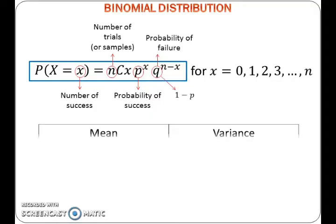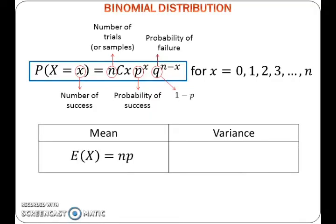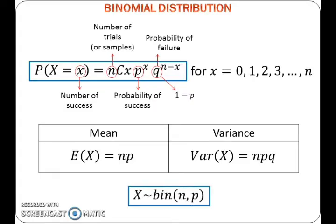The mean for binomial distribution is given by N times P, while the variance is given by N times P times Q. Also note that the two important parameters in binomial distribution are N and P.